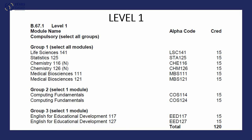At level one of the MBS program, there are three groups of modules, and students are required to register for only four modules from these three groups per semester. In the first semester, the student will register for Life Science 104, Chemistry 116, as well as the departmental module MBS 1.